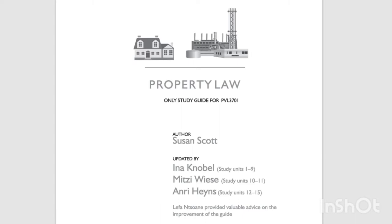First, ownership — which is always a lawful real relationship and therefore a real right. Secondly, possession — physical control of a thing with the intention of an owner (animo domini) — which is always unlawful and is therefore only a real relationship, not a real right. Thirdly, holdership — physical control of a thing with the intention to derive a benefit — which may be lawful or unlawful. When it is lawful, it could give rise to a real right.